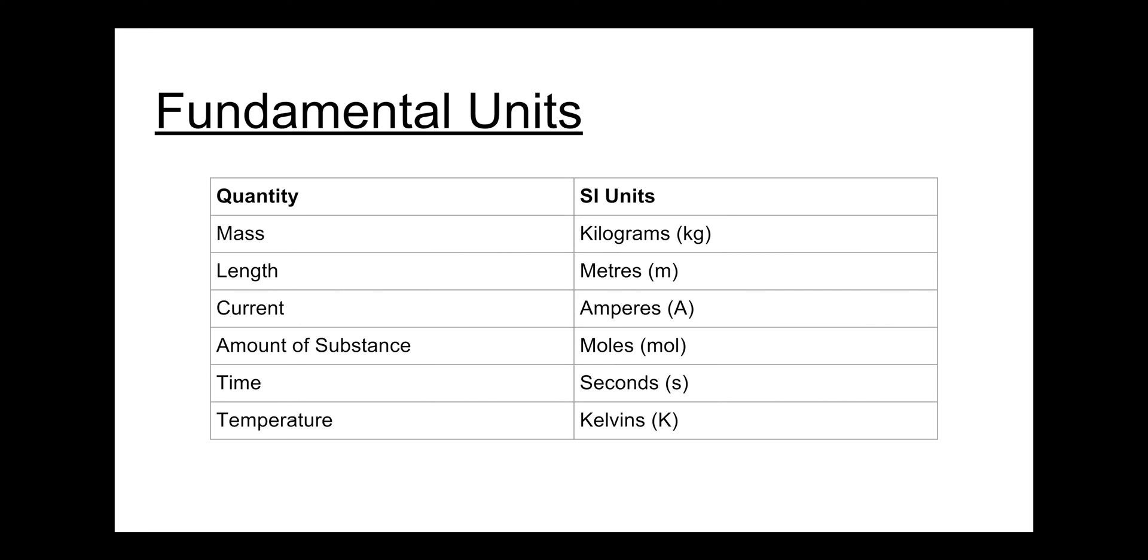These are the six fundamental units we need to know for IB. The mass, its SI unit is kilograms, length meters, current in amperes, amount of substance in moles, time in seconds, and temperature in Kelvin.